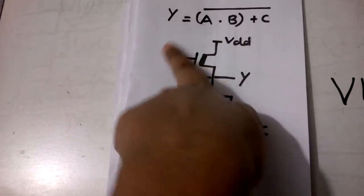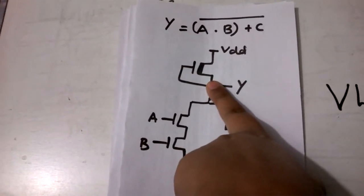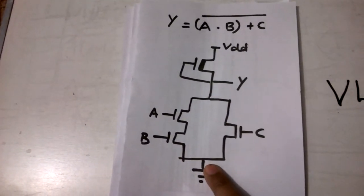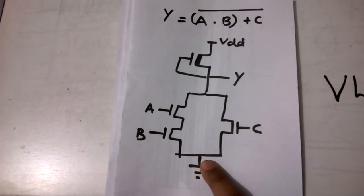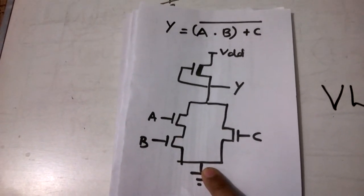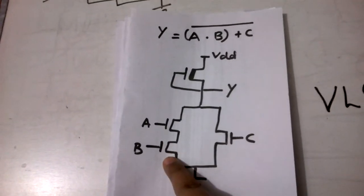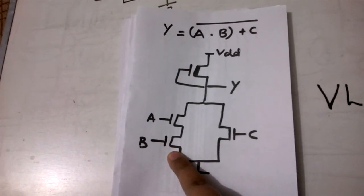The upper part remains the same for each and every logic which is to be designed. Only this N logic block is going to change. So here let's see how a and b are related. There is a dot in between a and b so a and b will be connected in series and plus c is there that's why c will be connected in parallel.